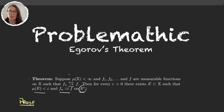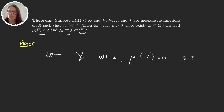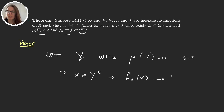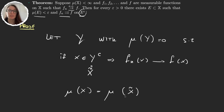We have convergence almost everywhere, so that means there exists some set Y with measure zero, such that if x is in the complement of Y then the sequence converges pointwise on x, and this happens for every x in this complement of Y. So let's call this space X̃, and instead of working with X let's work with X̃. Since we're only removing a set of measure zero, the measure of X is equal to the measure of X̃, and now we can work on this space where we have pointwise convergence everywhere.